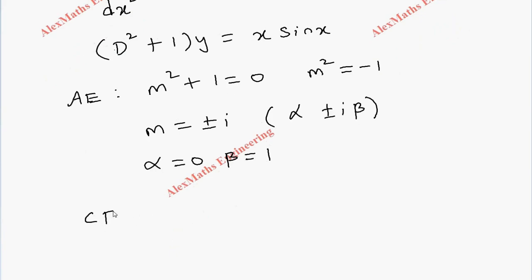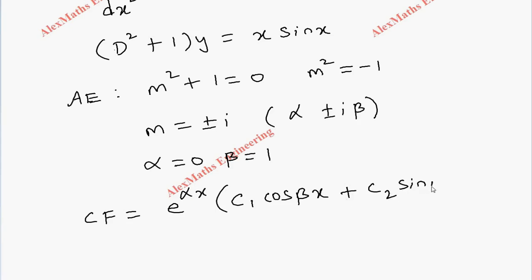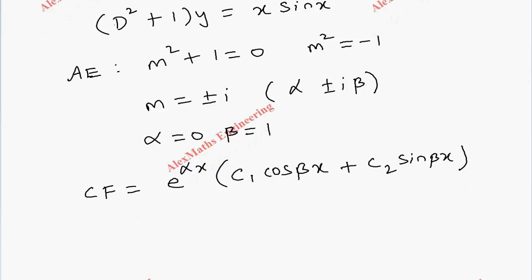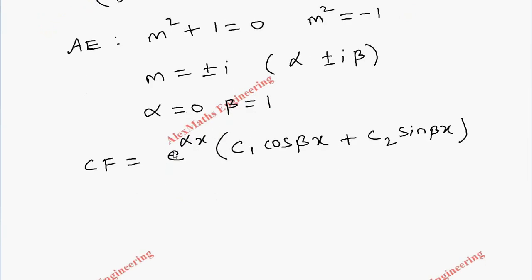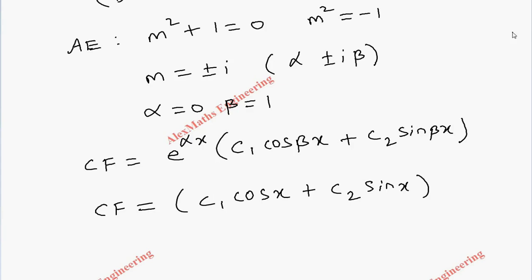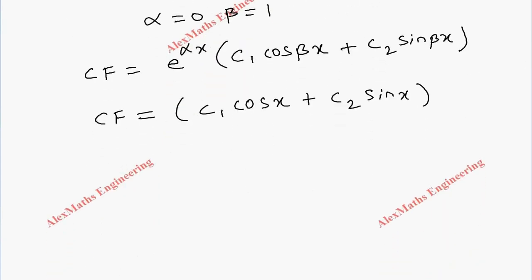So the complementary function is e^(αx) · (c₁ cos βx + c₂ sin βx). Substituting α = 0, e^(0·x) = 1, so we leave that. The complementary function becomes c₁ cos x + c₂ sin x.